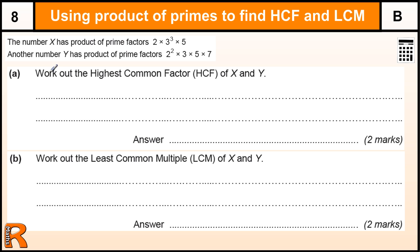Using products of primes to find the highest common factor and the lowest common multiple. Now the numbers have been given as products of primes already, so it saves a little bit of time if we're going to use the correct method.